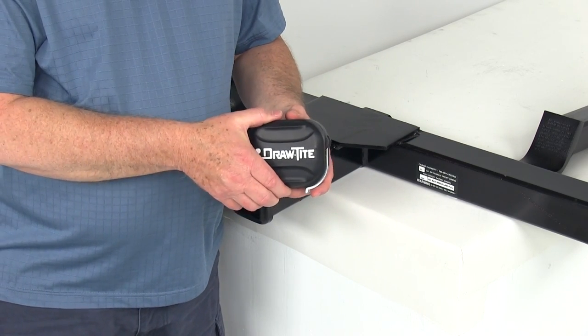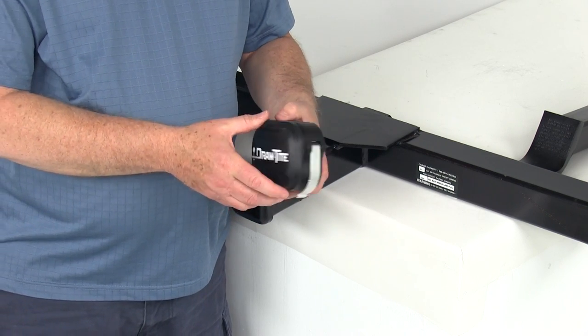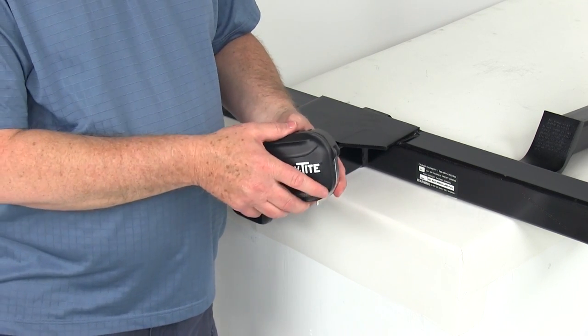Today we're going to review part number 63080. This is the Draw-Tite QSP Trailer Hitch Silencer and Cover for 2-inch hitch receivers.